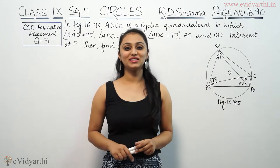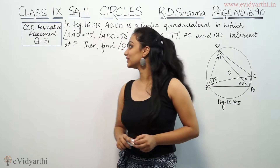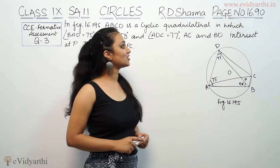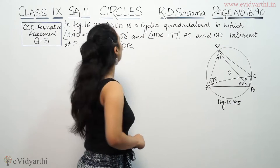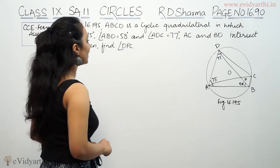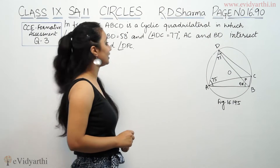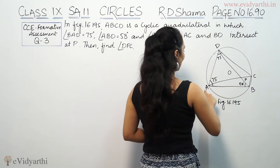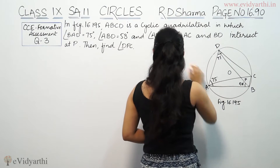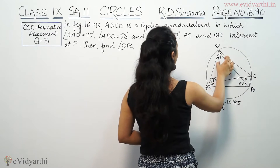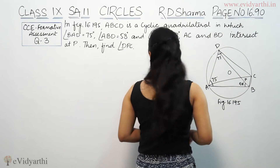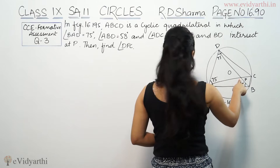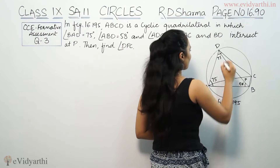Hey, what's up, this is Khushbu with another question on circles. This is question number 3 from CCE formative assessment of RD Sharma, page number 16.90. It says in figure 16.195, ABCD is a cyclic quadrilateral in which BAD is equal to 75 degrees and ADC is 77 degrees. AC and BD intersect at P. You have to find angle DPC.